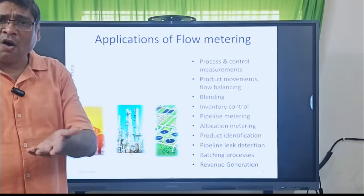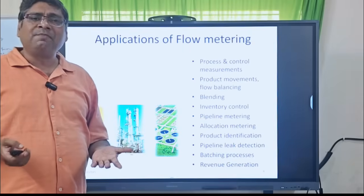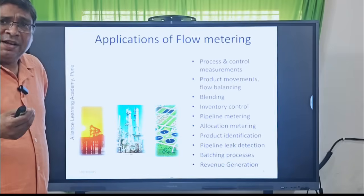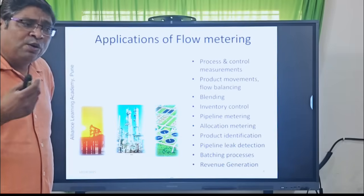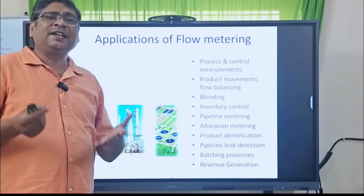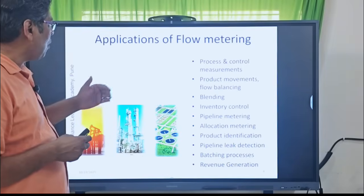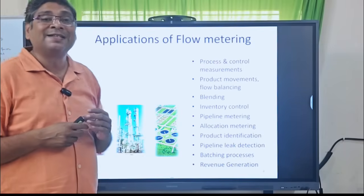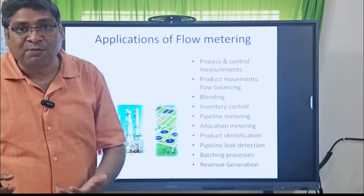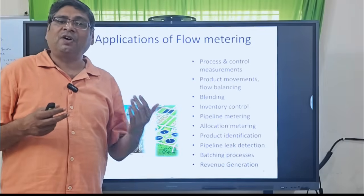The first application is process and control measurements — we use the flow meter in a process to see local and remote readings and use this reading as a set point. The second application is product movement and flow balancing — we understand what product is flowing, and by using density and other parameters, flow meters are used for this application.